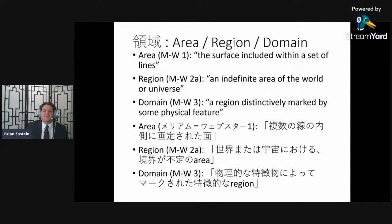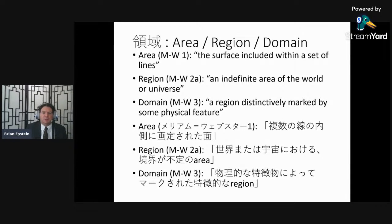The first term we are considering is 域 (yoiki), which is sometimes translated as area, region, or domain. As you'll recall, we typically use the Merriam-Webster dictionary for our definitions. I read all of the available definitions for these words, figure out which meaning is most applicable in a general patent case, and then put them on the slides for reference.